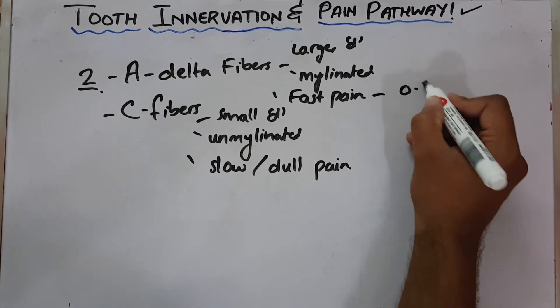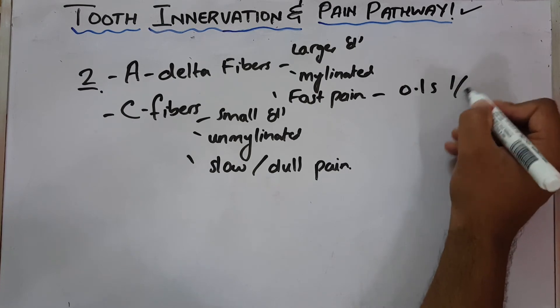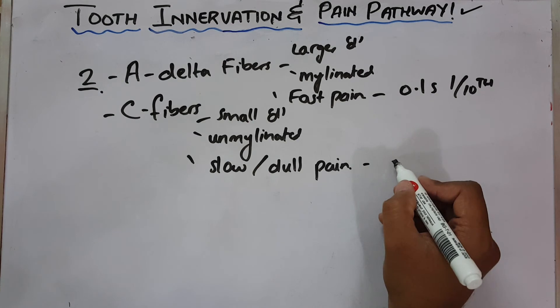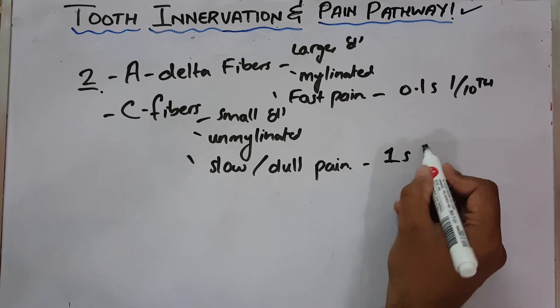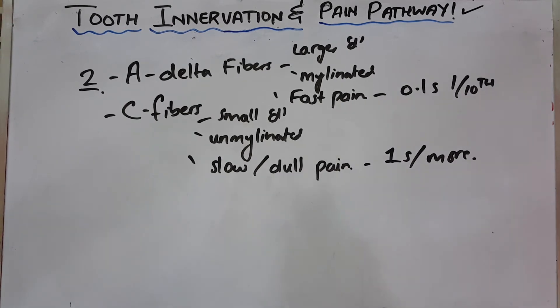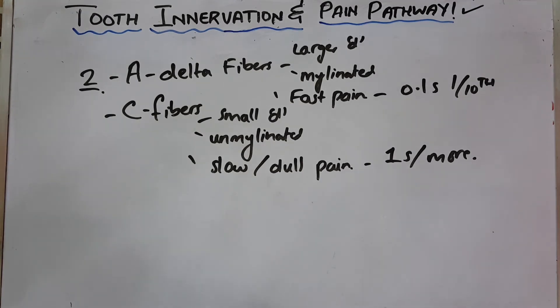Fast pain is the pain which is felt after about a tenth of a second when the stimulus is applied, and slow or dull pain is felt after one second or more. When you ask the patient about the character of the pain, they will tell that the pain comes in waves: a rapid wave followed by a slower wave, then again rapid, then slower, creating an alternating wavy pattern.